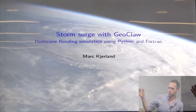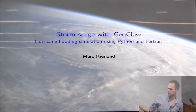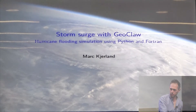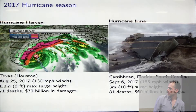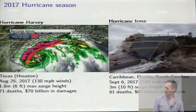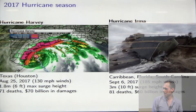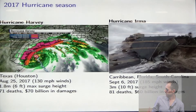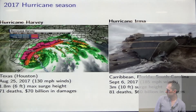Storm surge is one type of hazard from a hurricane — I'll focus on that. This year has been a pretty crazy hurricane season for the US. We've got Hurricane Harvey, which hit in August. It caused about 70 deaths and $70 billion of damages. And Hurricane Irma hit just a couple weeks later. It caused 81 deaths and about $60 billion of damages.